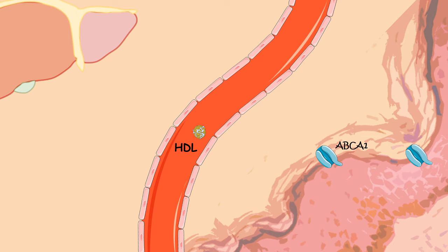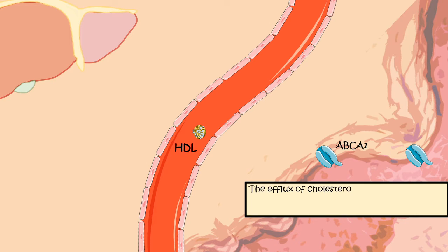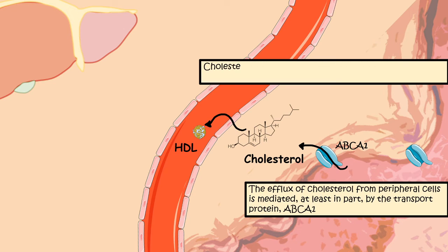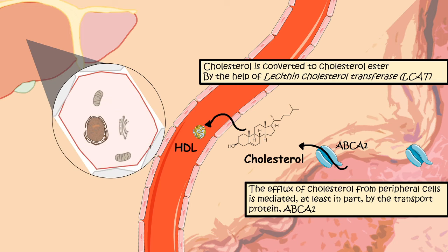Cholesterol is collected from extra-hepatic tissue with the help of transporters such as ABCA1, present in almost all peripheral tissues. ABCA1 mediates cholesterol export, and cholesterol is converted to cholesterol ester by the enzyme LCAT, or lecithin cholesterol acyltransferase. The HDL particle is then returned to the liver, where the SR1B scavenger receptor takes up the cholesterol and releases the HDL particle for the next round of scavenging.